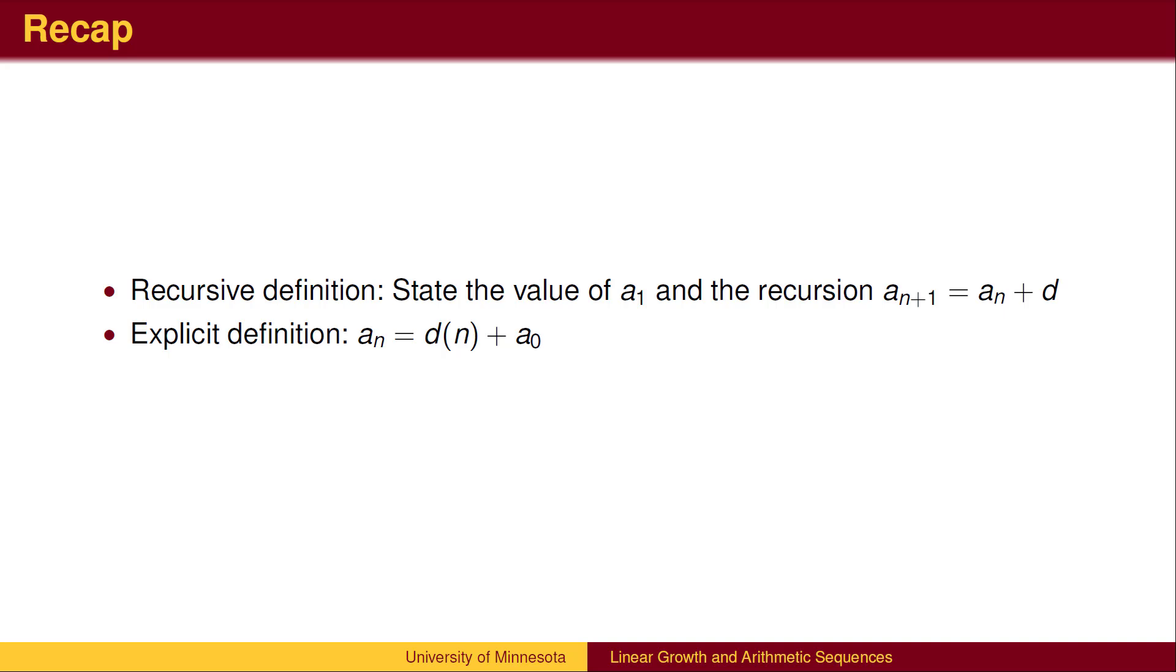To recap, in the recursive definition, we need to define an initial term, typically a_1. We then need to define how to get the next term from the previous term. In an arithmetic sequence, the pattern is to always add or subtract the common difference. In the explicit formula, we need to find the starting location a_0, and then add the common difference n times to arrive at the nth term.